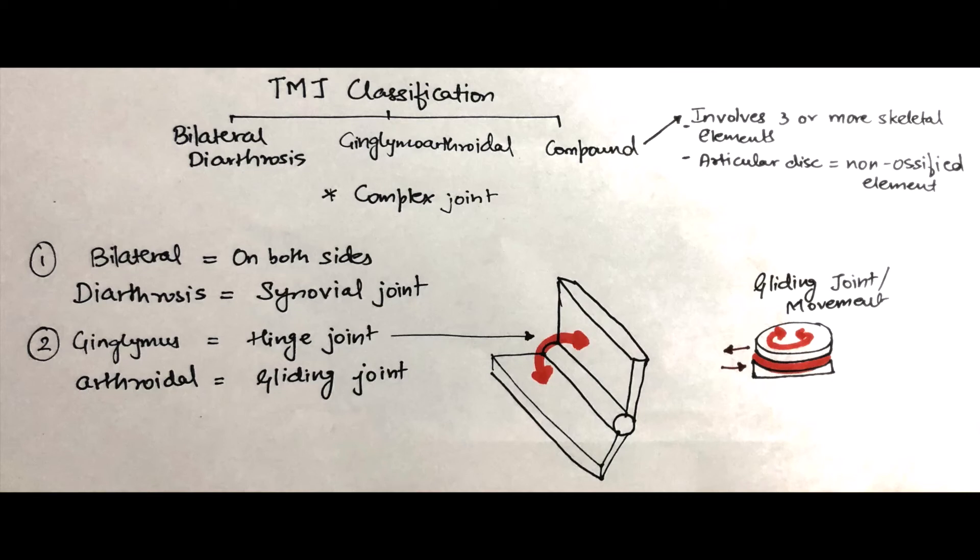Of these three elements, the articulating disc is a non-ossified element, an important point to remember that can crop up in a lot of competitive exams. So, TMJ is a compound joint by structure.